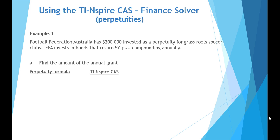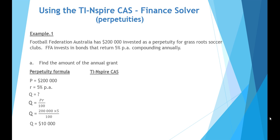Our first question asks us to find the amount of the annual grant. We have a principal of $200,000 and an annual interest rate of 5% per annum, with payments made annually. Because the rate per annum and the payments per annum are the same, we can substitute directly into the perpetuity formula, which predicts an annual payment of $10,000.